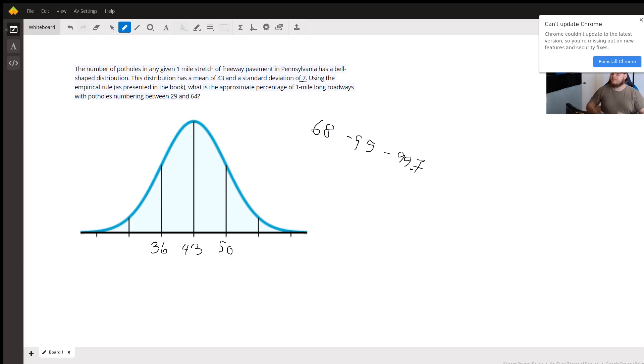If we go an additional standard deviation, so in this case it would be 57, and down here it would be 29. This is now two standard deviations above and below the mean. That means 95% of all of these one mile stretches of roads will contain between 29 and 57 potholes.